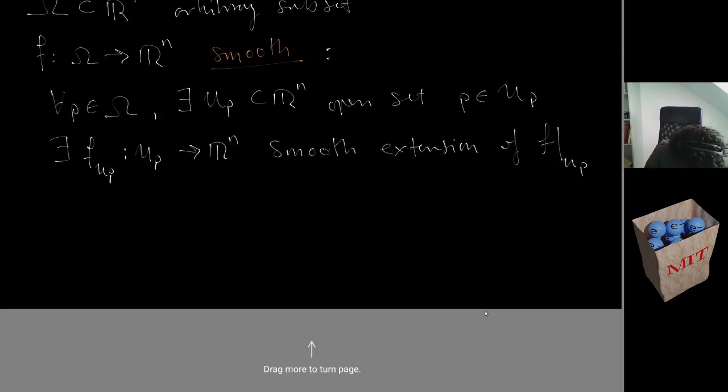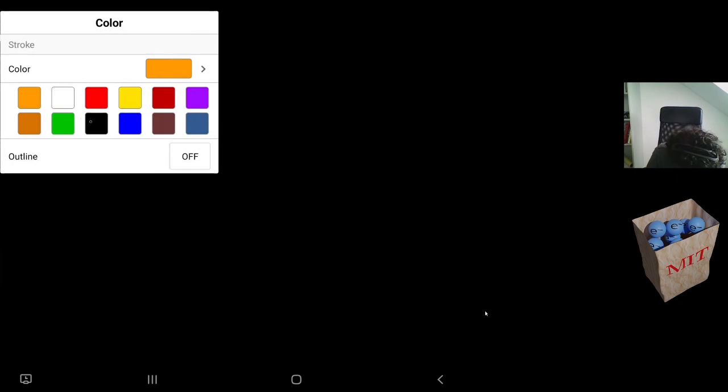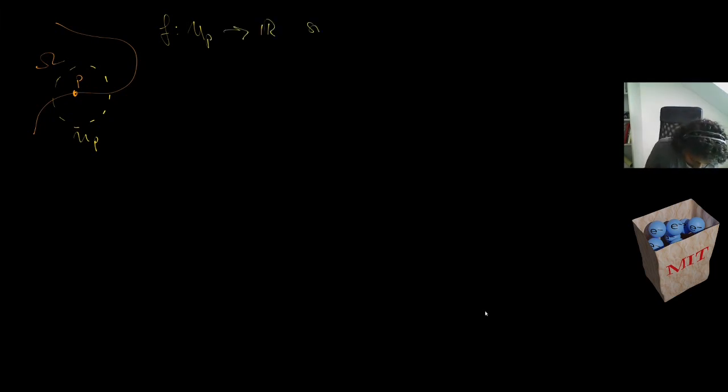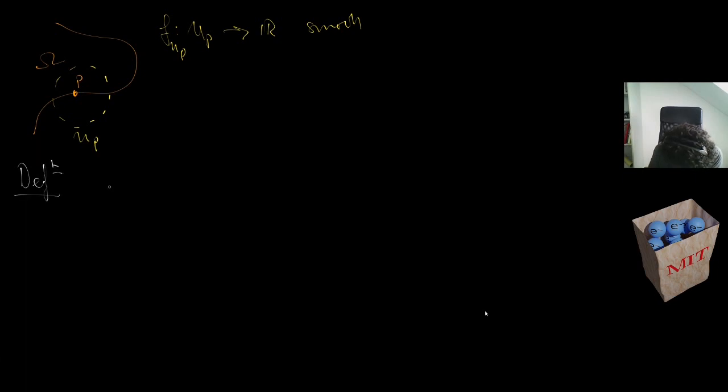Let me draw a picture to clarify. If we have a subset Ω with a point p, we're asking that there is some open set U_p, and we want a function f on U_p that agrees with the original function on the restriction of that set.